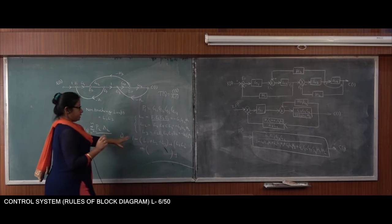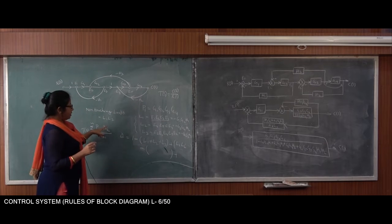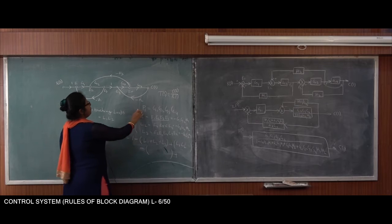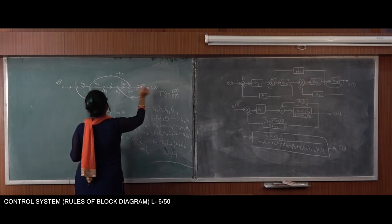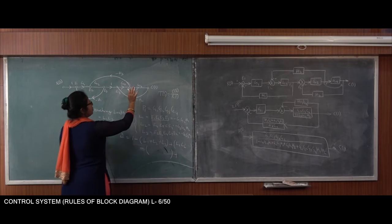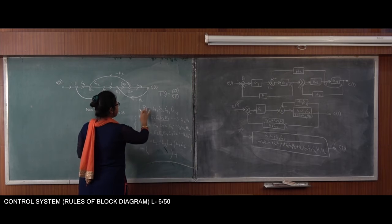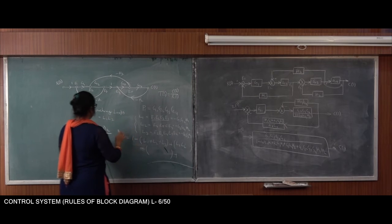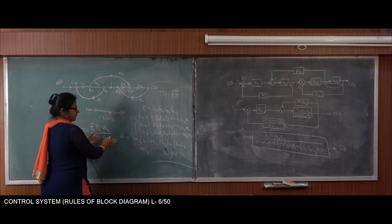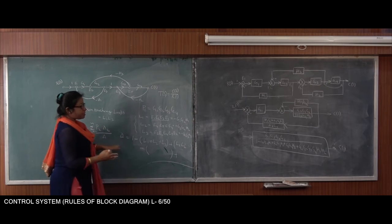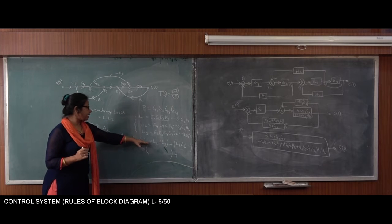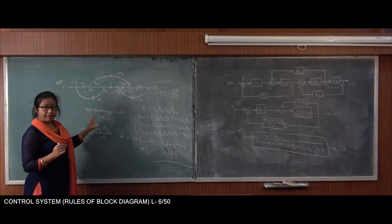Now for delta K: delta K depends on how many forward paths there are. Here I am getting one forward path with gain G1, G2, G3, G4. No other paths go from input to output, so there is only one forward path. Delta K uses the same formula as delta, but only includes loops that do not touch that particular forward path.